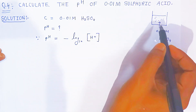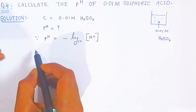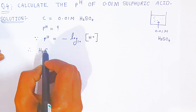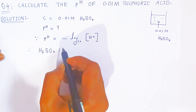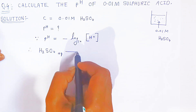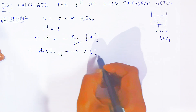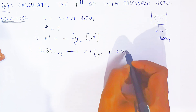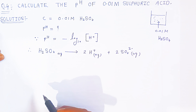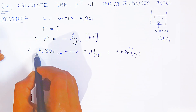Since it is sulfuric acid, when you dissolve it in water it will dissociate completely. H₂SO₄ when dissolved in water dissociates into two H⁺ ions (aqueous) and one SO₄²⁻ ion (aqueous). Now, looking at this dissociation, one mole of sulfuric acid gives two moles of H⁺ ions.